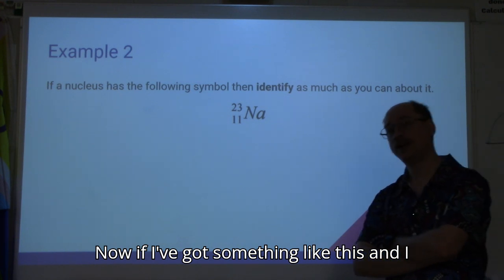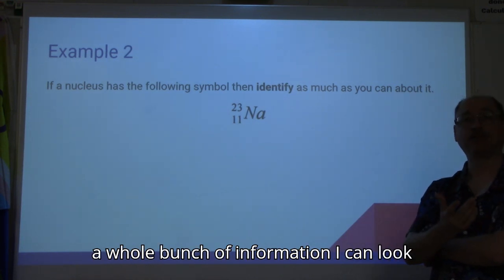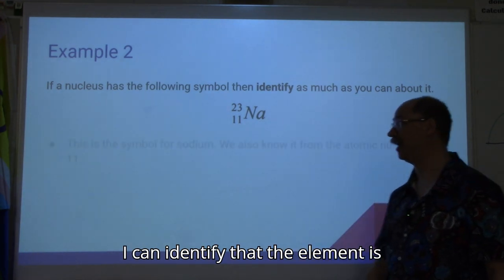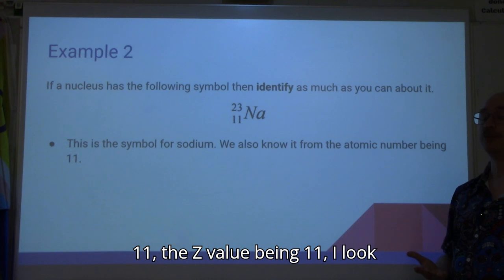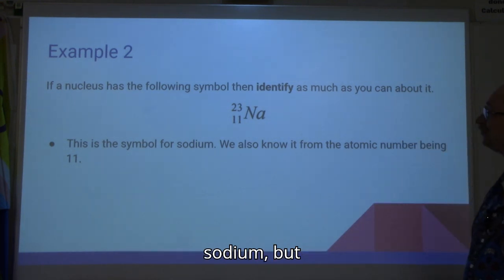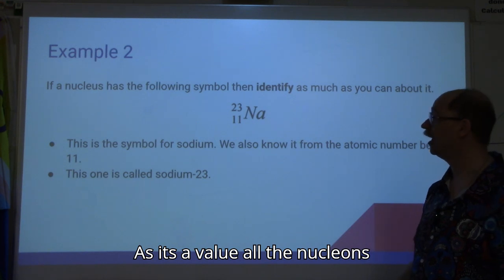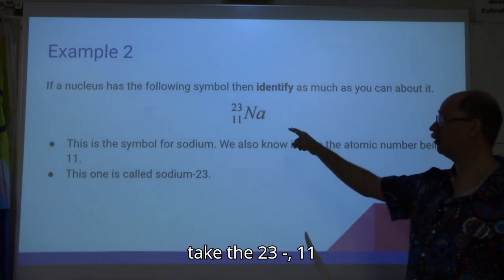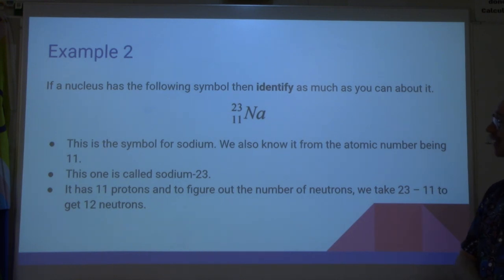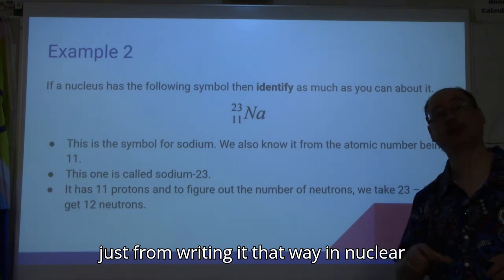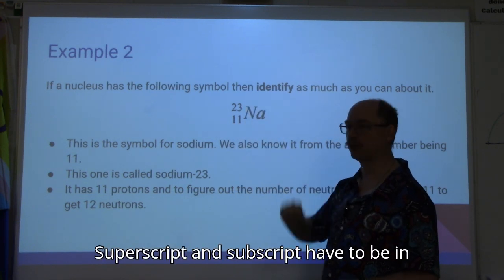Given a nucleus written with A equals 23 and Z equals 11, I can look at my periodic table and identify the element as sodium. The Z value of 11 means it has to be sodium. With A equal to 23, it is sodium-23, and I can take 23 minus 11 to find there must be 12 neutrons. You get a whole bunch of information just from writing it that way in nuclear physics, and remember our numbers appear to the left as superscript and subscript.